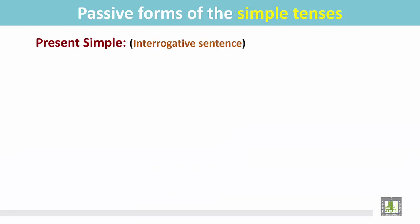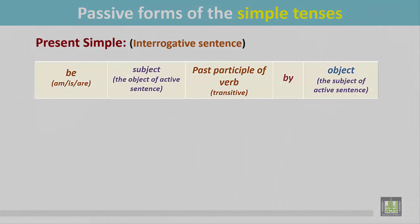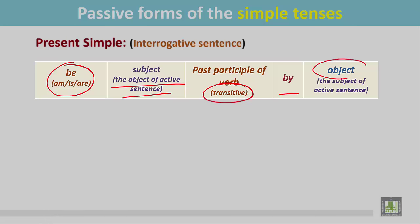Present simple interrogative sentence. See the structure. We put the be verb first, then the subject — and we get the subject from the object of an active sentence. Then we put the past participle form of the transitive verb, then 'by', and finally we write the object, which we get from the active sentence.